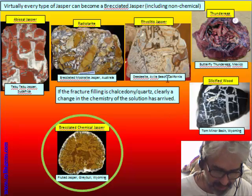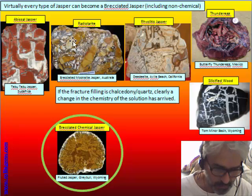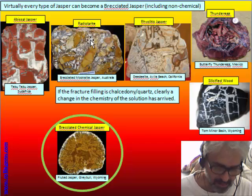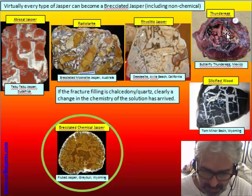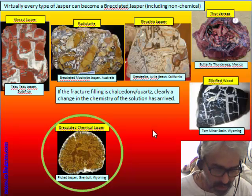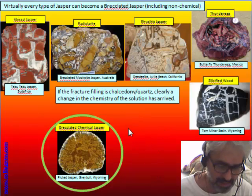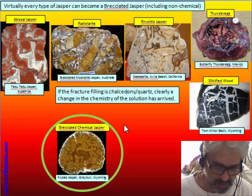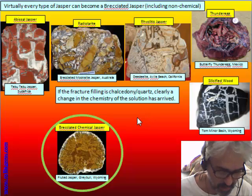Virtually every kind of jasper can be brecciated. We see abyssal jasper like the Tabu-Tabu from South Africa, which is a kind of mookaite, a radiolite. There are rhyolitic jasper, also thunder egg, silicified wood, and petrified wood that can be brecciated. And the brecciated chemical jasper is the real brecciated group because it has a special origin. So it is possible that many of them have a similar origin, but we study this group more deeply.